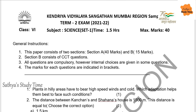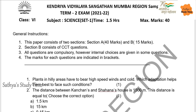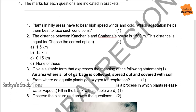First question: Plants in hilly areas have to bear high-speed winds and cold. Which adaptation helps them best to face such conditions? The trees will be cone-shaped and the leaves will be needle-shaped. These adaptations help the plants in hilly areas to bear high-speed winds and cold. You can write cone shape.